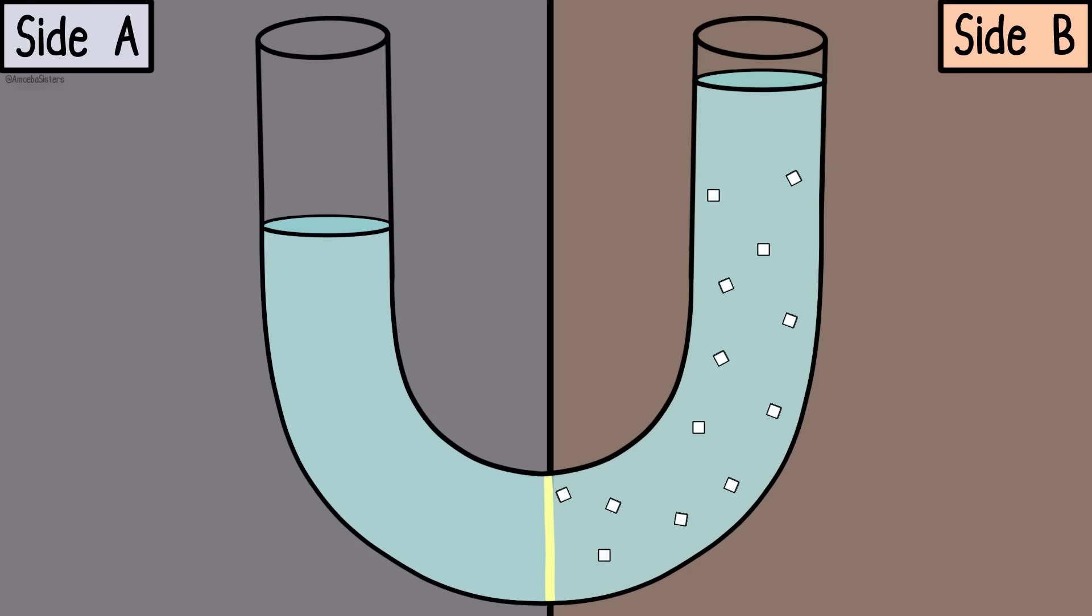Once equilibrium is reached, the net movement of water across the two sides will be zero. But remember that water still likes to move and movement still occurs.